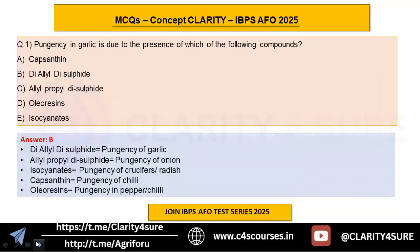Here are the pungency principles of different crops: diallyl disulfide is the pungency compound of garlic; allylpropyl disulfide is of onion; isocyanates are of radish or crucifers; capsaicin is of chili; and oleoresins is the pungency principle of pepper and chili. Capsaicin is an example of an oleoresin.